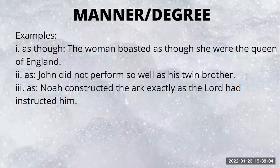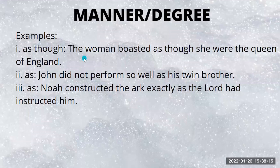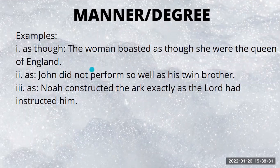Next is the subordinating conjunction of manner or degree. Example: 'as though': 'The woman boasted as though she were the queen of England' — that's the manner in which she boasted. Then 'as': 'John did not perform so well as his twin brother.' Another instance: 'Noah constructed the ark exactly as the Lord had instructed him' — meaning in the manner he had been instructed.